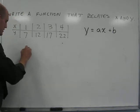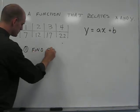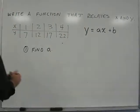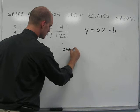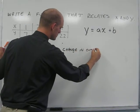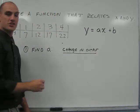In the first part, we need to solve for a. To find a, we need to find the change in the output and put that over the change in the input.